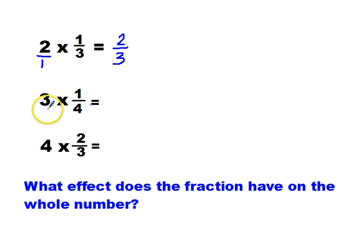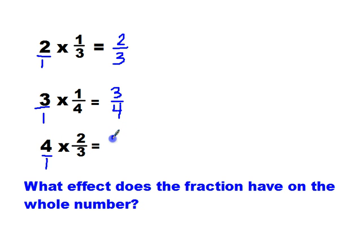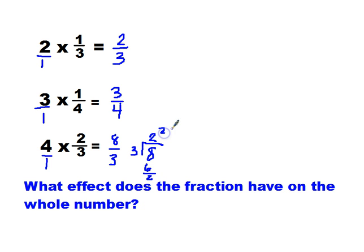That's strange. Let's do it again. 3 times 1 is 3, 1 times 4 is 4, and I get 3 fourths, which is less than the three wholes with which I started. One more time. 4 times 2 is 8, and 1 times 3 is 3. I get 8 thirds. 3 into 8 goes twice — 2 times 3 is 6 — I end up with 2 and 2 thirds, which is smaller than the four wholes I started out with.